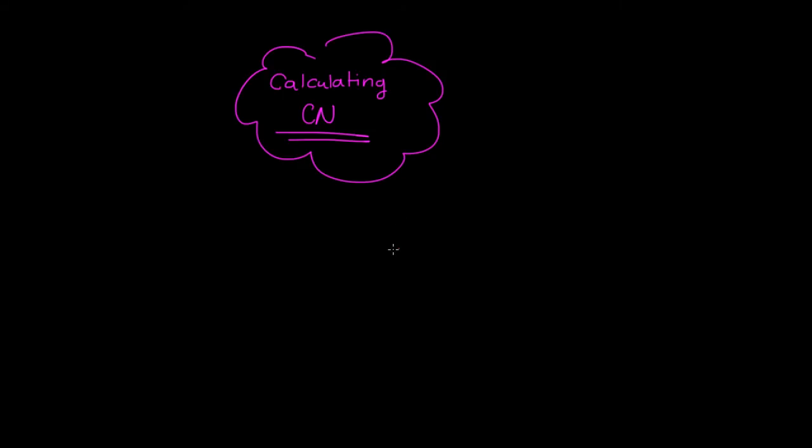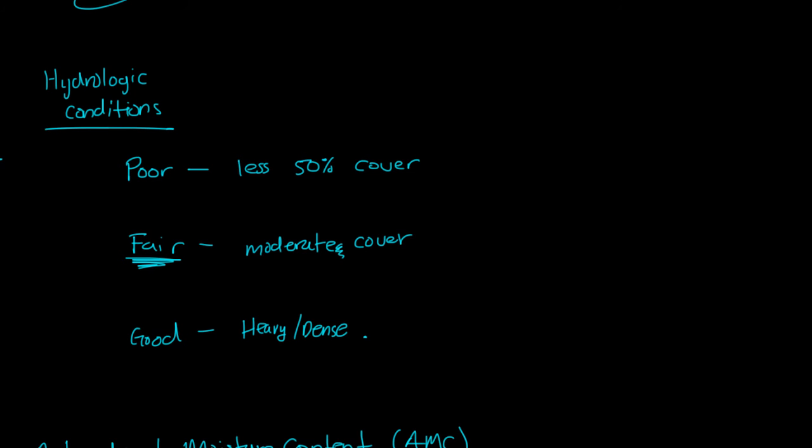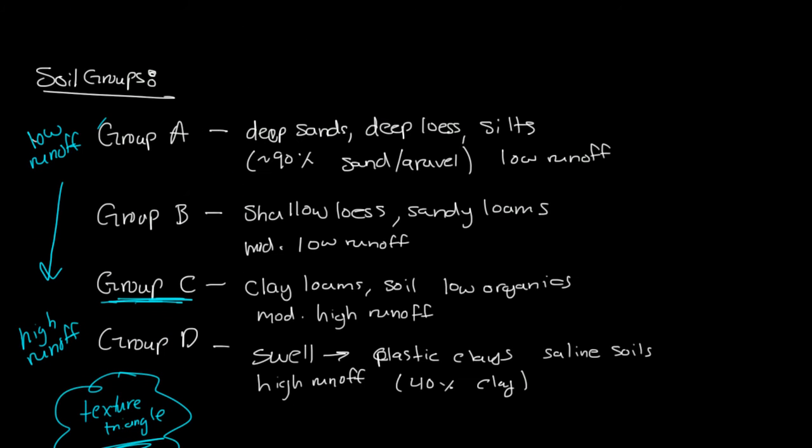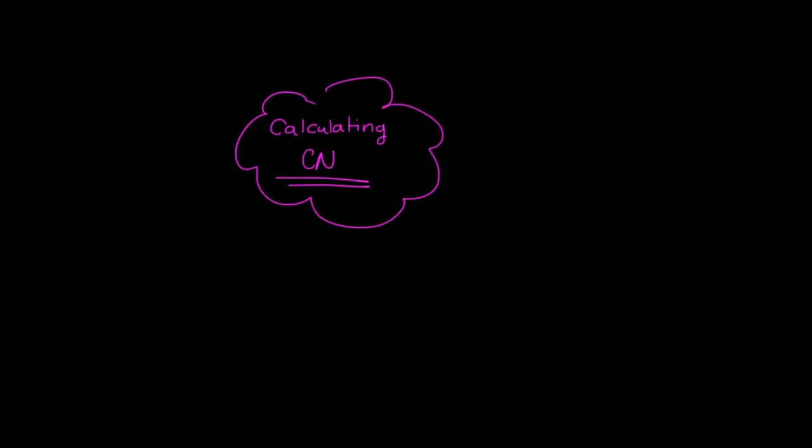Calculating curve runoff numbers. How do we calculate them? Well, so far we've talked about what the curve numbers are dependent on. They're dependent on the antecedent moisture content, the hydrologic conditions, and the soil groups. And remember, curve runoff numbers are numbers used or developed by the SCS, the Soil Conservation Service, to estimate the runoff in a certain area.